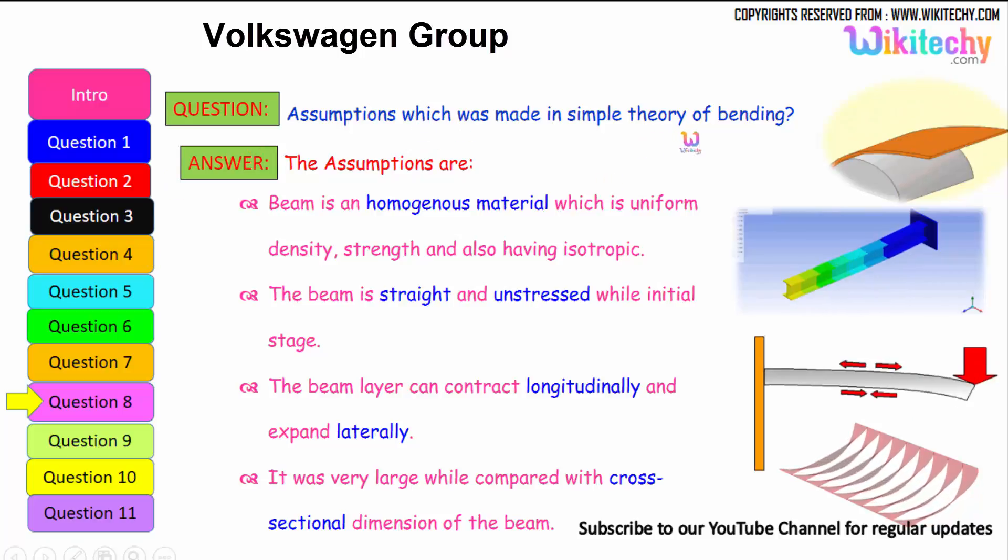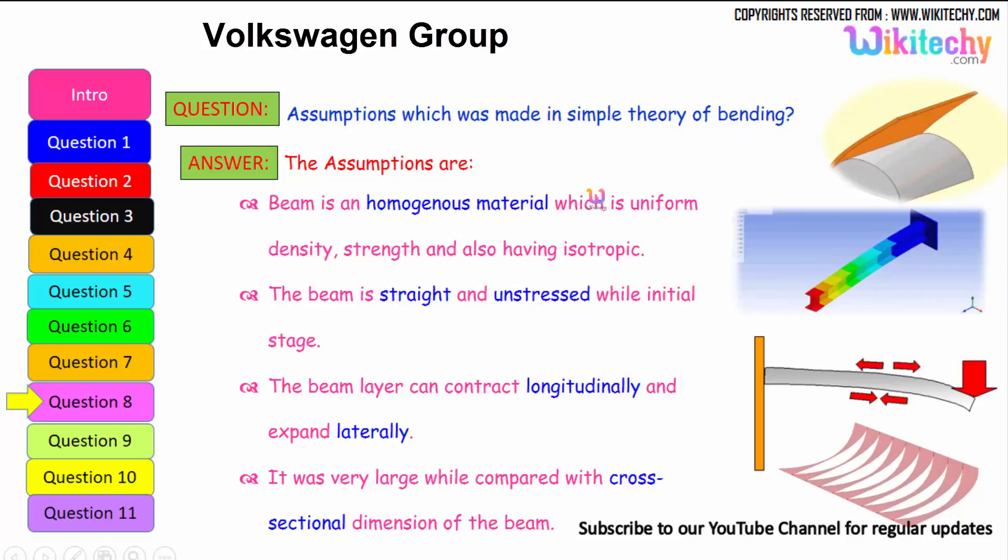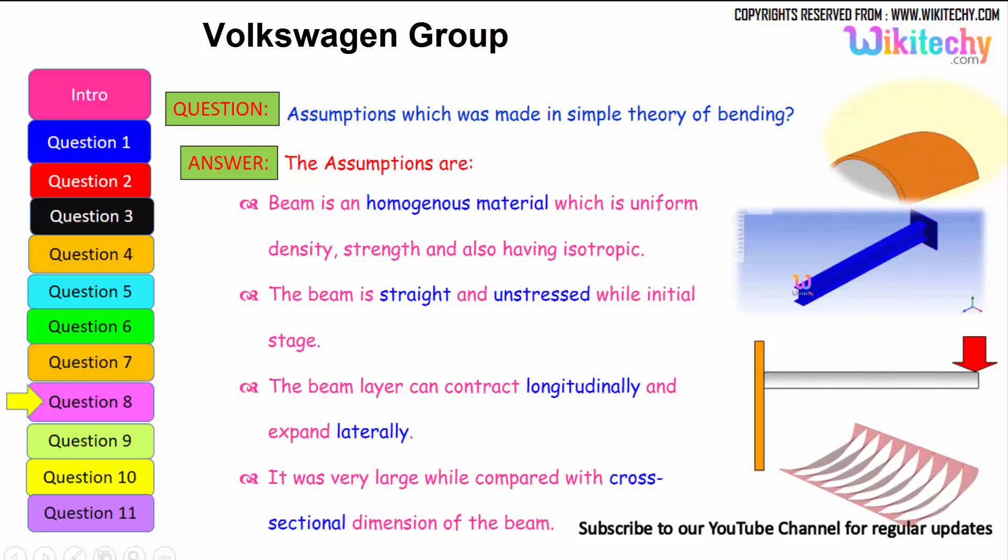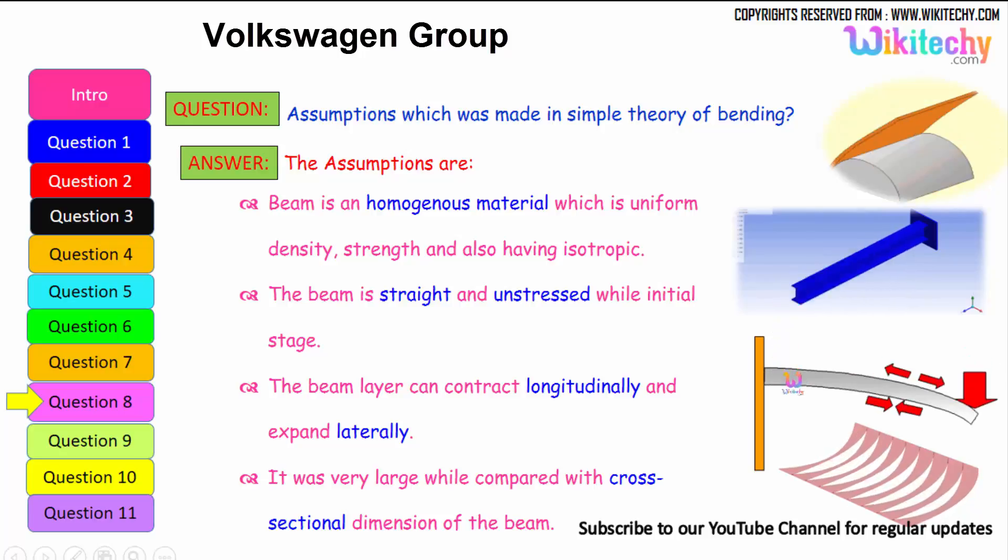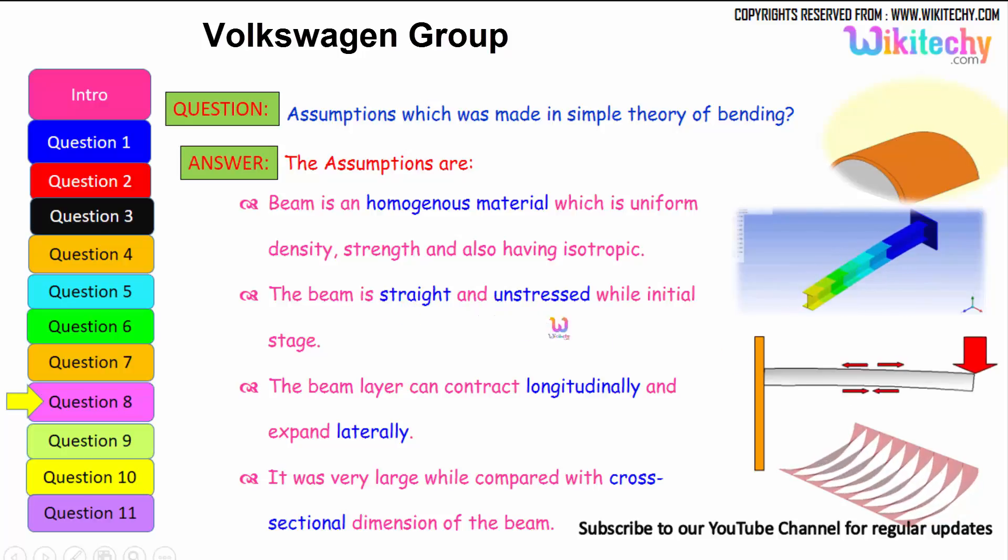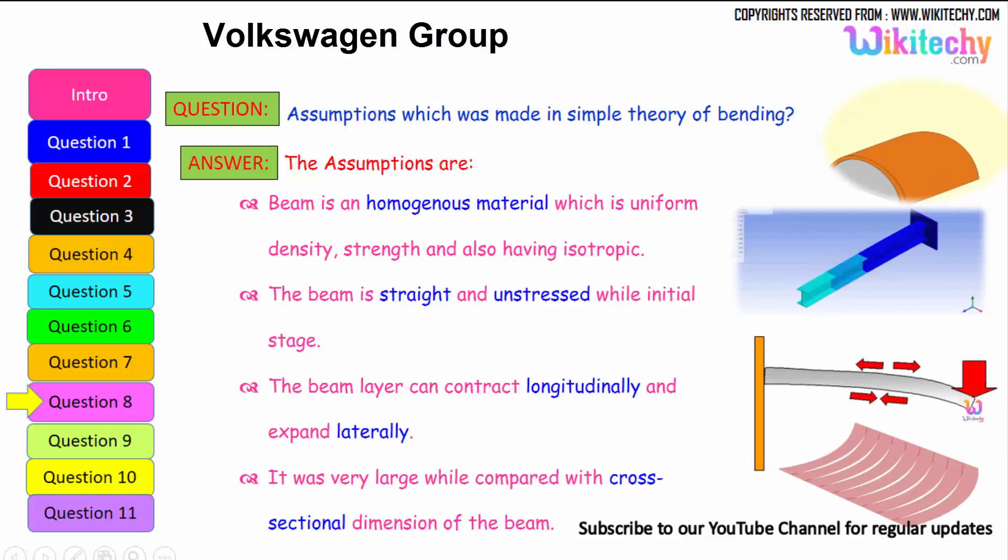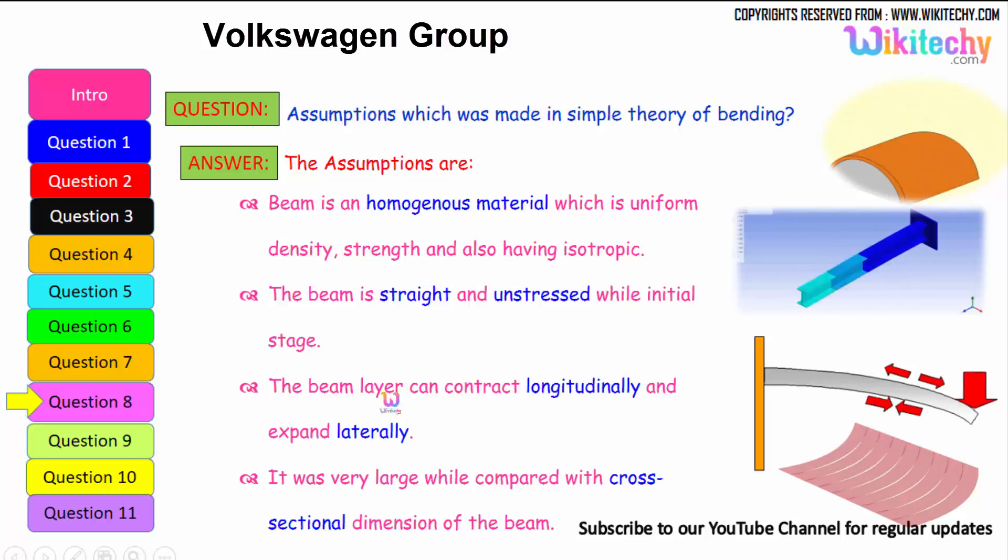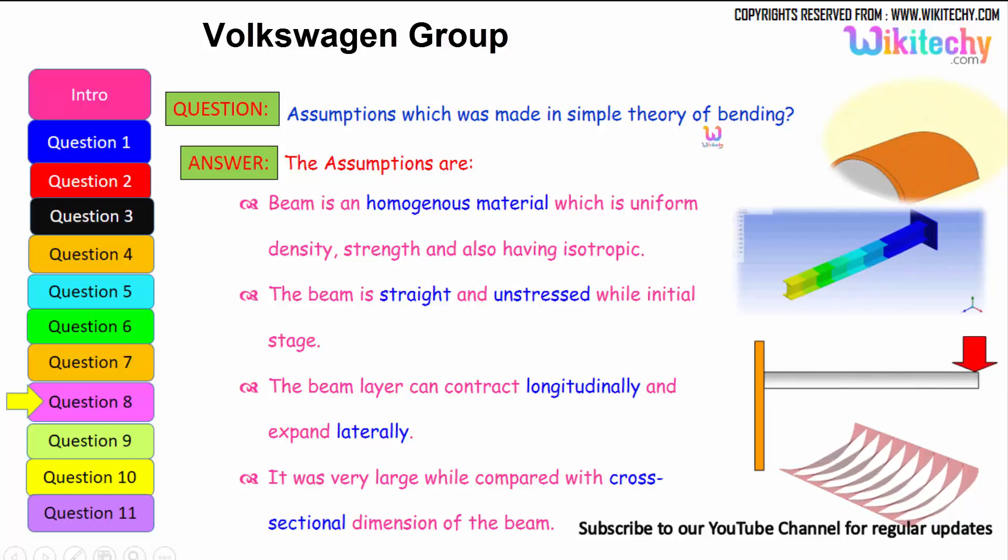What is the assumption which was made in simple theory of bending? The assumptions are: beam is a homogeneous material which is uniform density. It should be uniform density, strength and also having isotropic. The beam is straight and unstressed while initial stage, that is the second assumption. The beam can contract longitudinally and expand laterally. It was very large when compared with the cross-sectional dimension of the beam. It should be very large when compared with the cross-sectional dimension of the beam. These are some of the assumptions we have to make for the theory of bending.